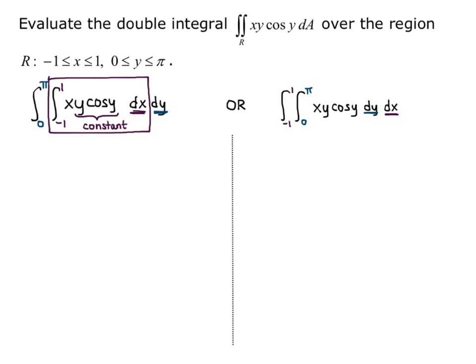Now on the left hand side let's look at if we do with respect to x first. Then the y cosine y is just a big constant because the x is my variable that I'm integrating with respect to. And so I would just get x squared over 2 times that big constant. So x squared over 2 times y cosine y evaluated from x equals negative 1 to 1. And when I plug that in I would get 1 half y cosine y minus my lower bound when I plug in a negative 1. I'm also going to get 1 half y cosine y. And so actually I get 0 from my inner integral.